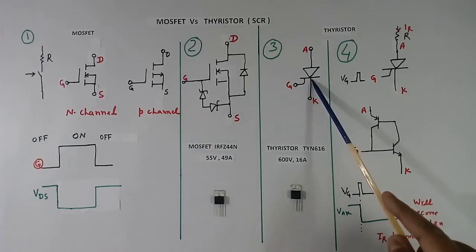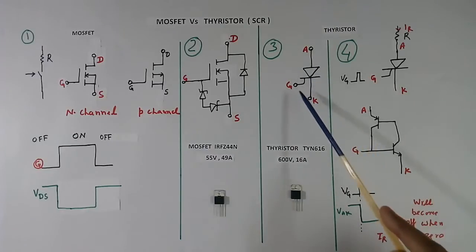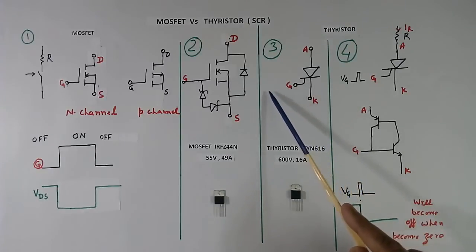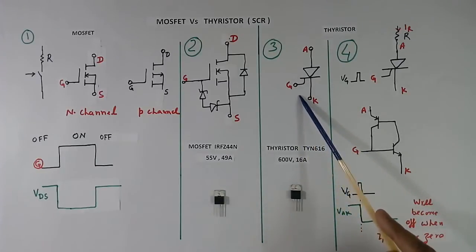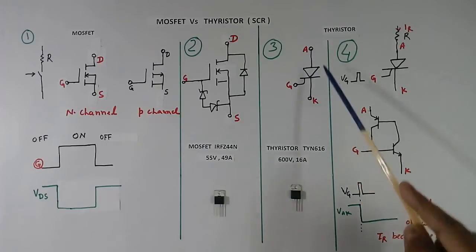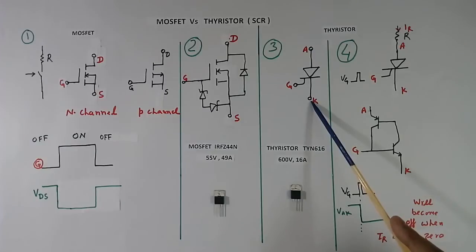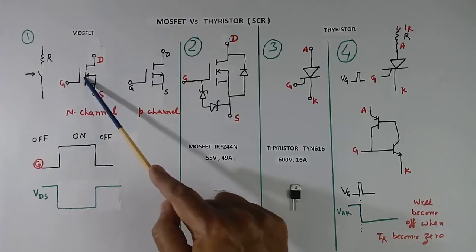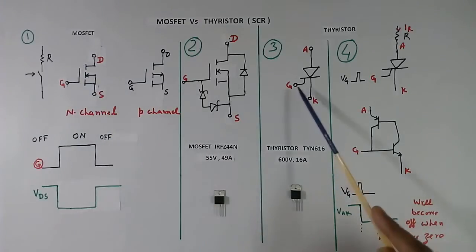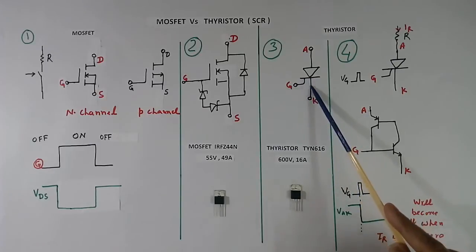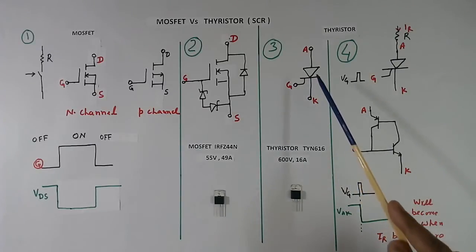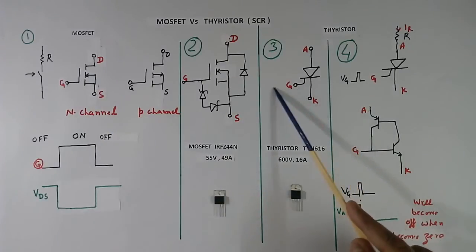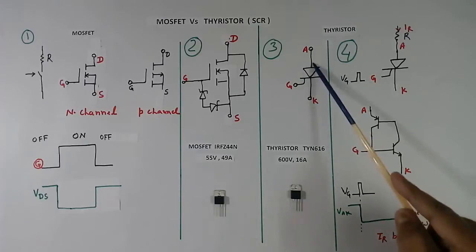Now we come to thyristor. It has 3 terminals: anode, cathode, and gate. When we apply a gate pulse, this thyristor becomes ON and current flows. When we apply a gate pulse here, no current flows here because it is insulated, but gate current flows. If you remove the gate pulse, this thyristor will not become OFF.